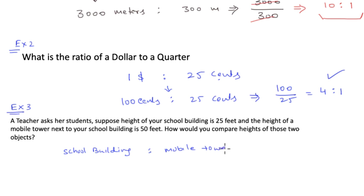So this one is 25 feet and the mobile tower is 50 feet. How would you compare the heights of these two objects? Now these are in the same unit of measurement.